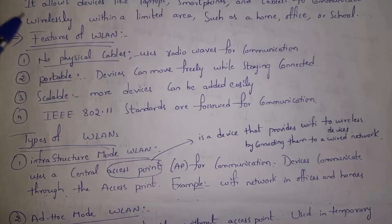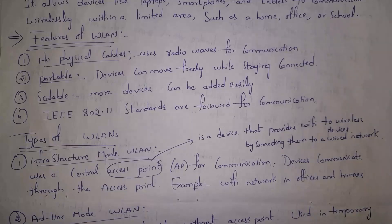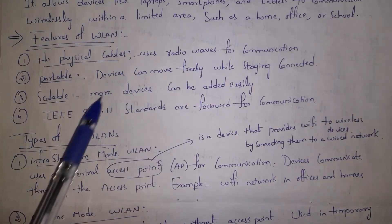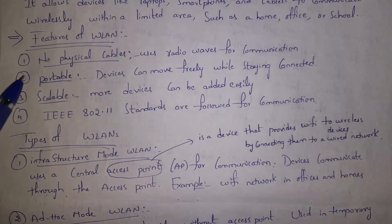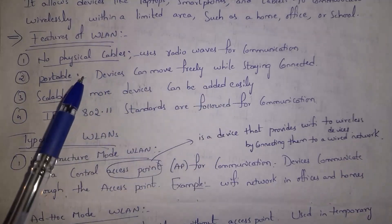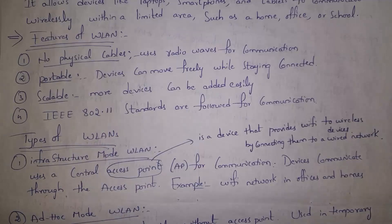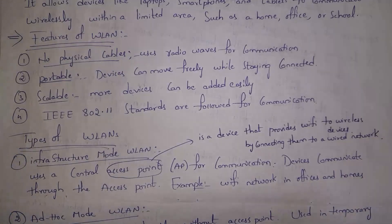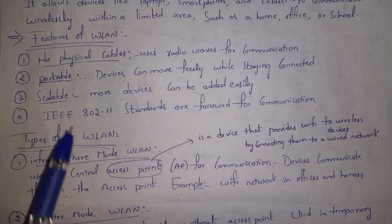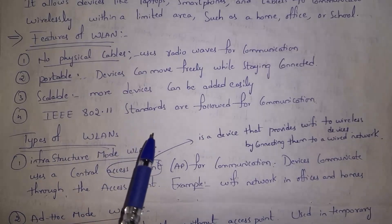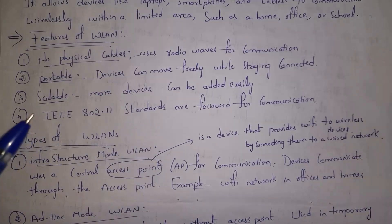Now I will explain features of WLAN. The first one is no physical cables — in wireless LANs, data is transferred in the form of radio waves so there is no need for physical cables. Second is portability — since devices are not connected by cables, we can easily move them and they remain connected to the network. Third is scalability — we can easily add new devices. Fourth is IEEE 802.11 standards, which are the rules that allow all devices to communicate wirelessly.